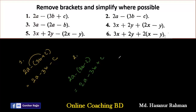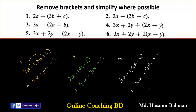Now number 3. Number 3 says: 3a minus (2a minus b). Then: 3a minus 2a, and minus into minus b gives plus b. So 3a minus 2a equals a, giving us a plus b. And that is the answer of number 3.